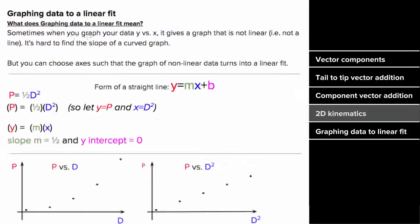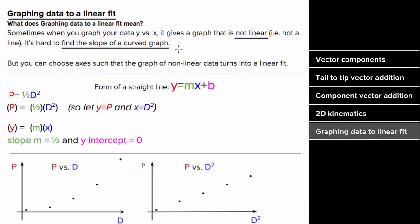Something else you'll definitely have to know for the AP exam is how to graph data to a linear fit. When you graph data, it doesn't always come out linear, and when you don't get a linear graph it's hard to find the slope of that curved graph. However, you can force your data to be linear if you write down the expression that gives the relationship between your data in the form of a straight line. The form of a straight line is y equals mx plus b, where y is the vertical axis, x is the horizontal axis, m is the slope, and b is the y-intercept.